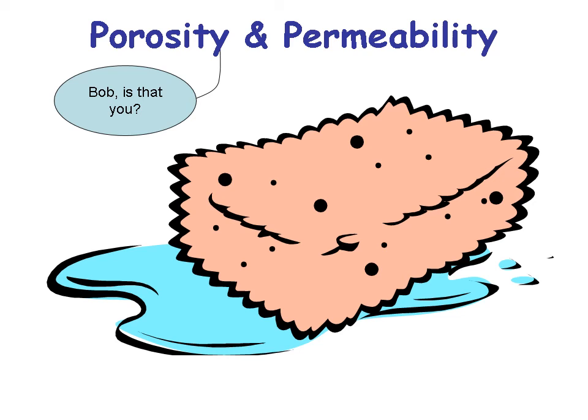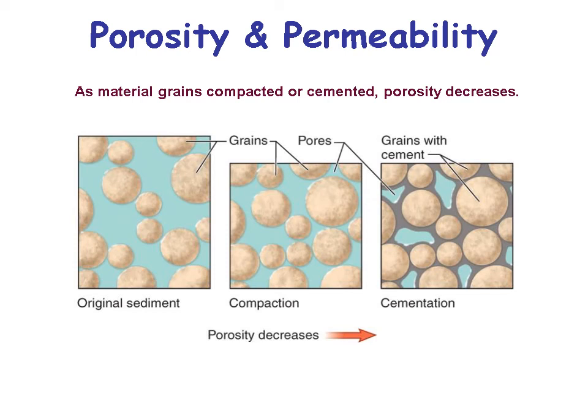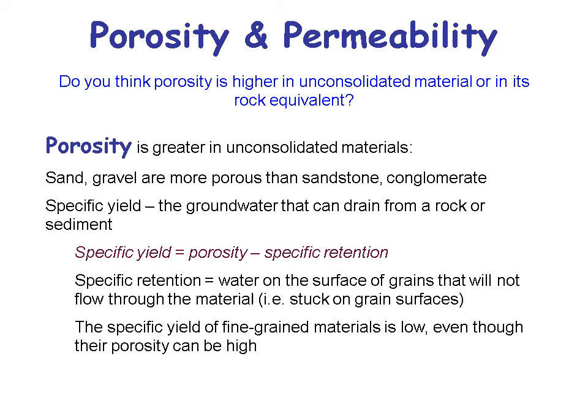Sponges are an example of porosity — the sponge part is like the grains and the holes in the sponge are like pores. As grains get compacted and cemented, porosity decreases. On the left you have original sediment that hasn't been compacted; it starts to get compacted, and then you cement it and there's less space between those grains. So porosity is higher in unconsolidated material than in its rock equivalent, because it hasn't been packed or cemented.